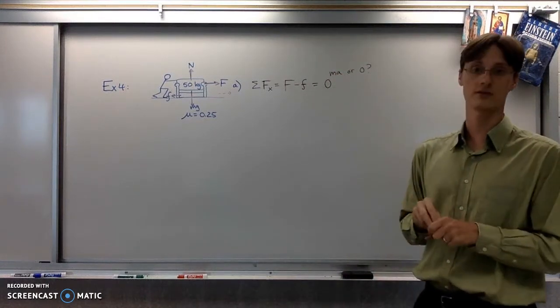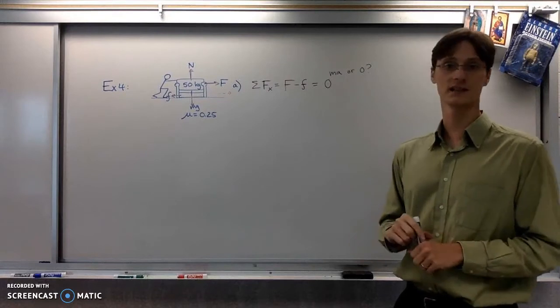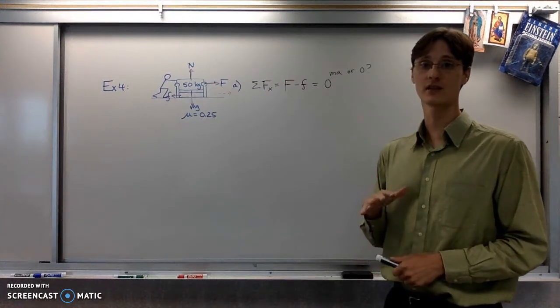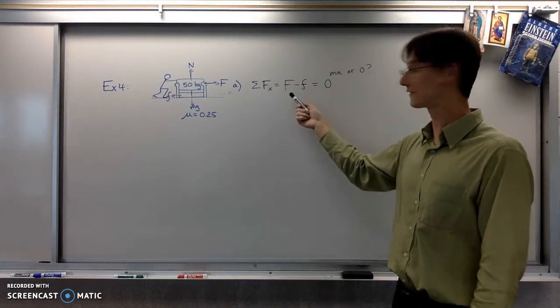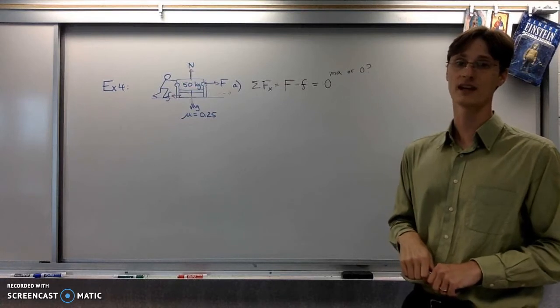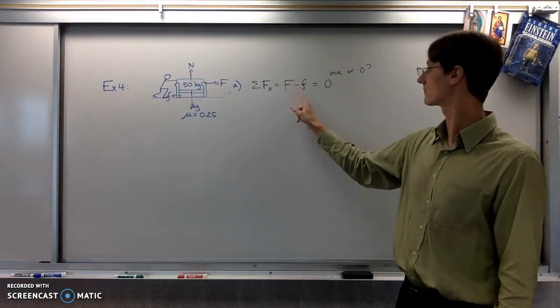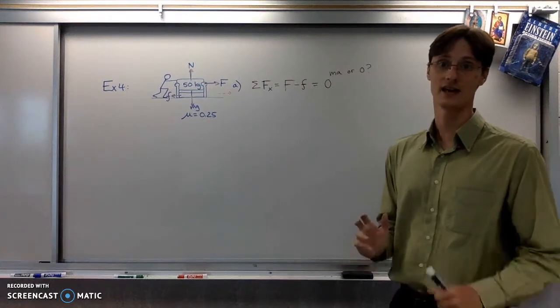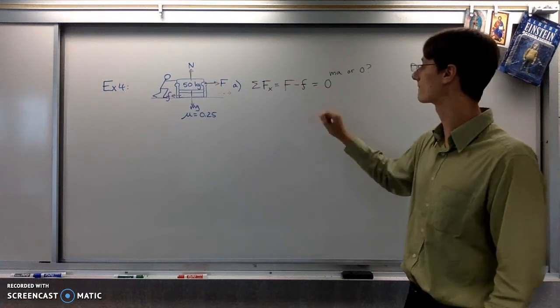The question was, what's the minimum force required to start it moving? So really this equal sign here is more like a less than or equal to sign. Meaning the sum of the forces is going to be zero as long as this force is less than or equal to the friction force. If this exceeds the friction force, then it will actually start accelerating. If we're trying to find the minimum force needed to start it moving, it's kind of like we're solving for the last value of this applied force that won't make it move.